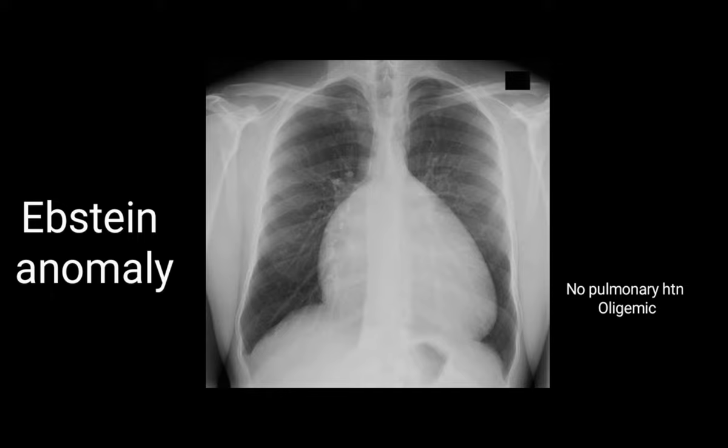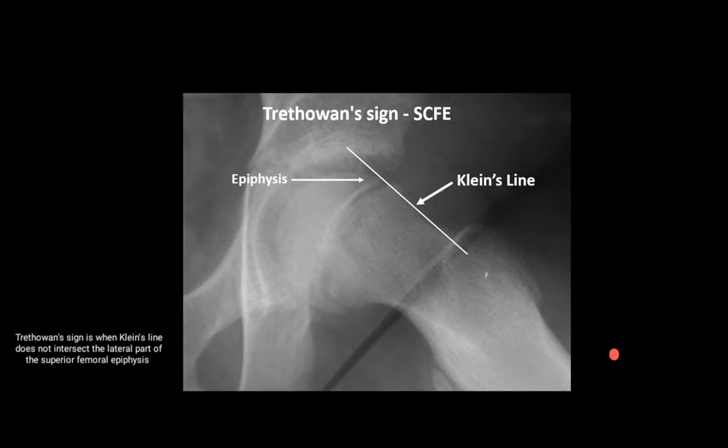The next image is of Ebstein anomaly. Ebstein anomaly shows a box-shaped heart, and we need to remember that there is no pulmonary hypertension and the lung fields are oligemic. This is the X-ray image of Ebstein anomaly showing the box-shaped heart.